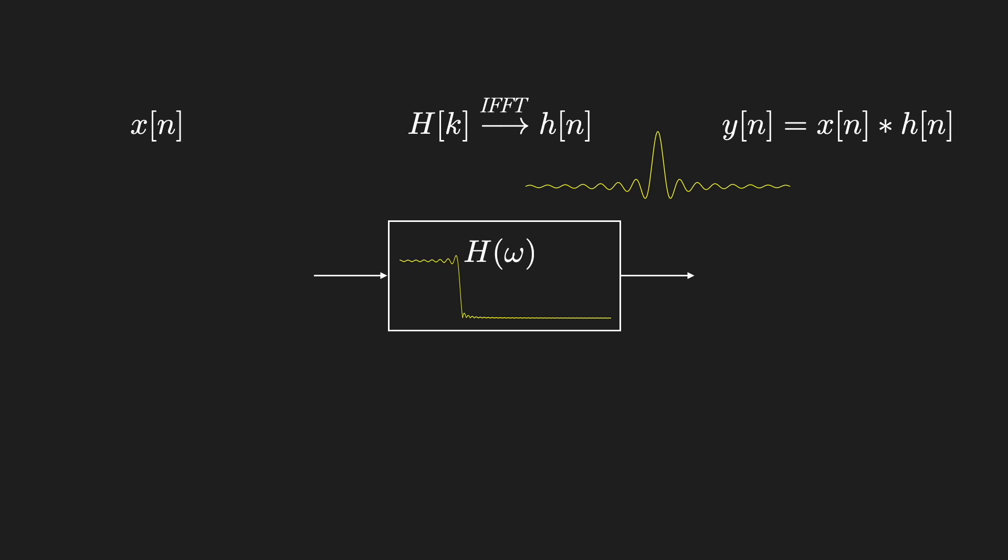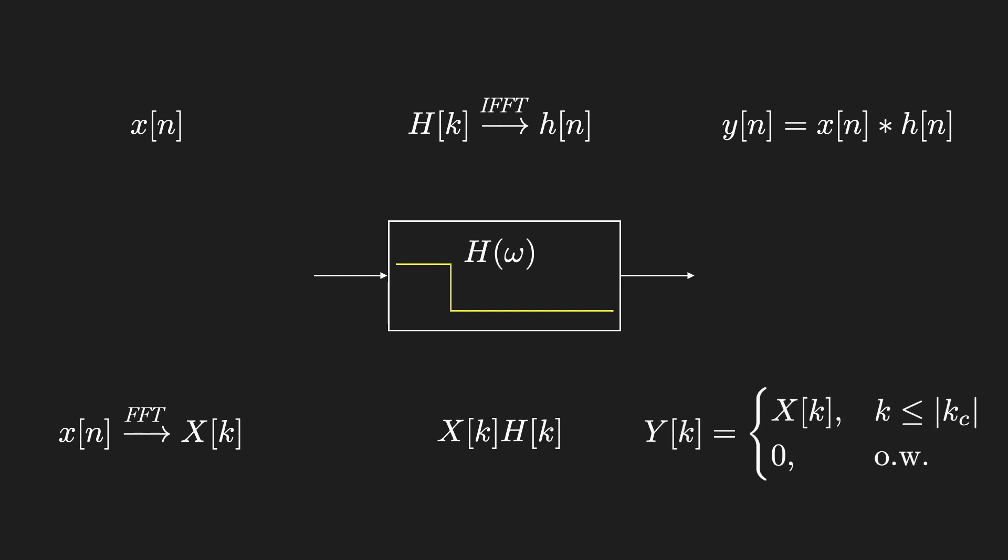But you might be asking, why don't we just implement the filter directly as a multiplication in the frequency domain? To do this in practice, we'll have to use the FFT. I'll cover this process in detail in the next video, but here's a quick overview. Take the FFT of X of N, multiply that by H of K, which is really just keeping the frequency values of the signal we want, and setting the others to zero. And then we take the inverse FFT of the result, Y of K, to compute the time domain output. It seems like that should work.